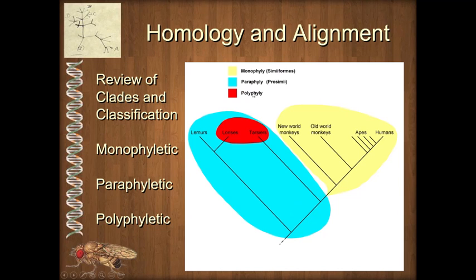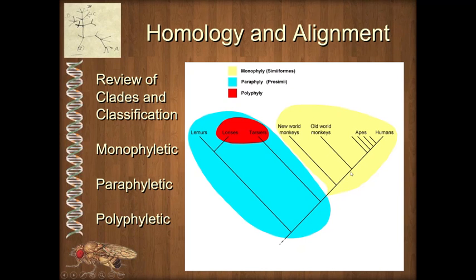Both paraphyletic and polyphyletic groupings are not valid. If we put lemurs, lorises, and tarsiers into one group, that would be paraphyletic because tarsiers are more closely related to the other primates, leaving out that entire group. Putting lorises and tarsiers into a single group is invalid because we left out both the lemurs and the yellow group — all descendants from their common ancestor. Remember, you can't just look at what's right next to each other on the diagram; things adjacent may be only distantly related. You have to look at how they connect via common ancestral nodes.